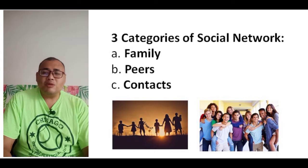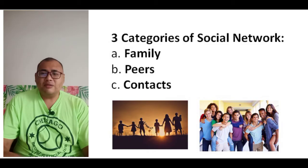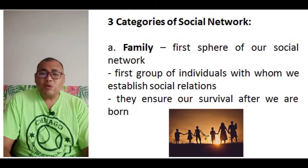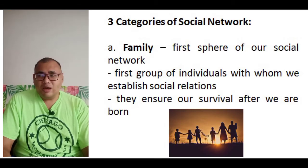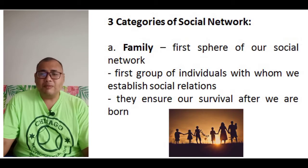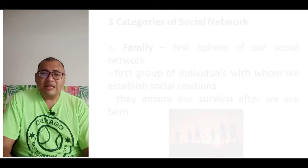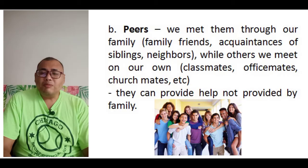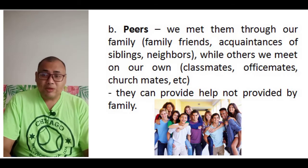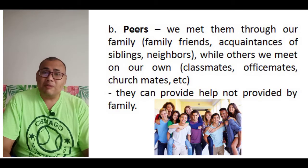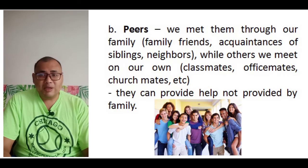We have three categories of social network: family, peers, and contacts. Family is the first sphere of our social network — the first group of individuals with whom we establish social relations, ensuring our survival after we are born. As we grow older, we meet our peers. We meet some through our family — family friends, acquaintances, even siblings' friends and neighbors — while others we meet on our own, like classmates, officemates, and church mates. These people provide help that is not provided by the family.